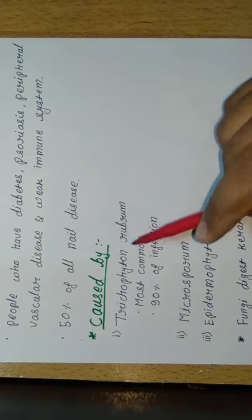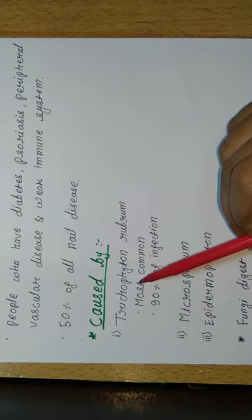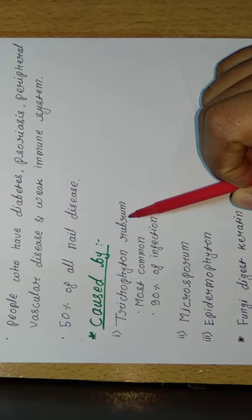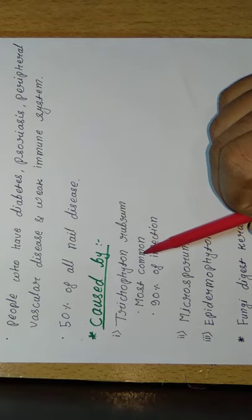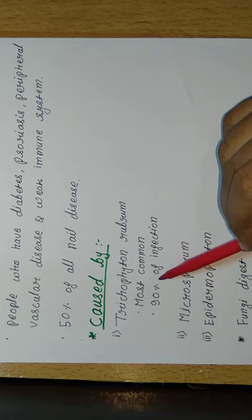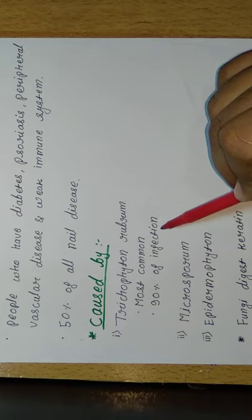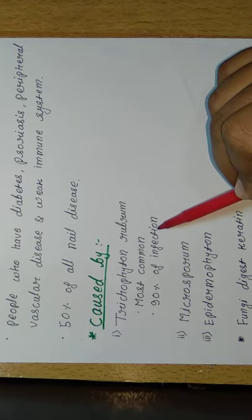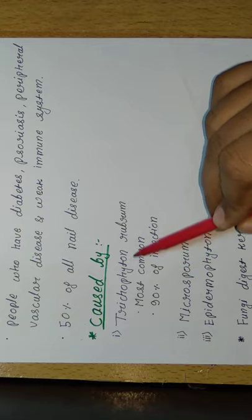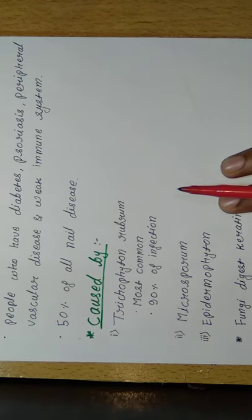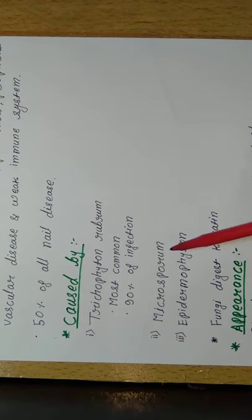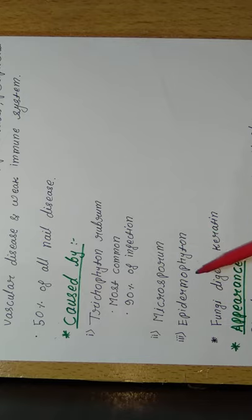What is the causative organism of onychomycosis? Onychomycosis is caused by Trichophyton rubrum, which is the most common cause, responsible for 90% of onychomycosis infections. The second one is Microsporum and the third one is Epidermophyton. These three are examples of fungi which cause onychomycosis.